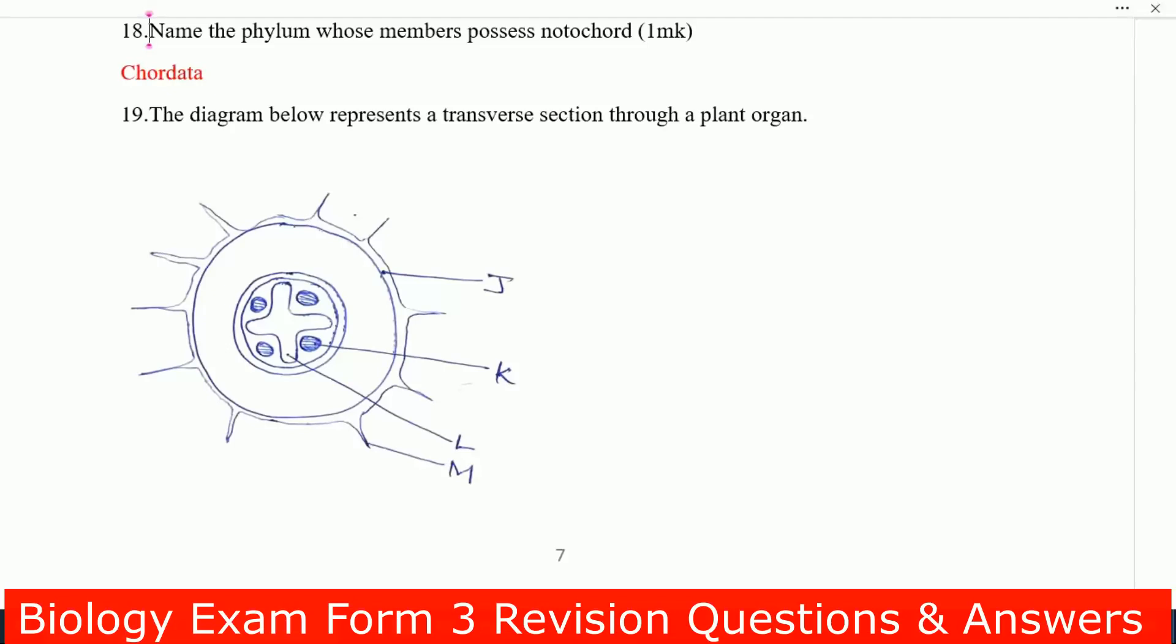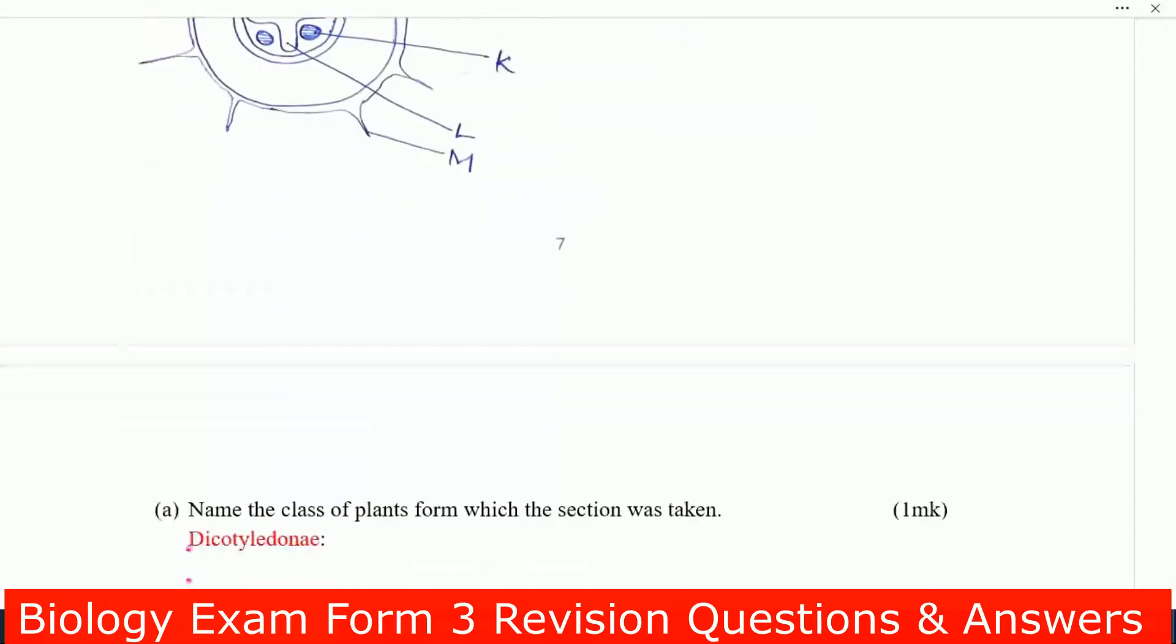Next, number 19, the triangle below represent a transverse section through a plant organ. You can see it here, you have J, K, L, and M.